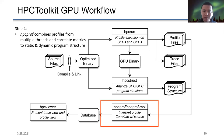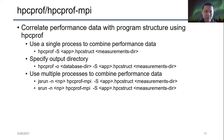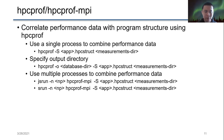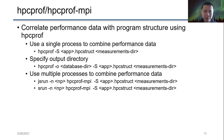Now that we have static program structure and runtime profile data, we use HPCProf to combine profiles from multiple threads and correlate metrics to static and dynamic program structure. HPCProf is relatively simple — pass -S plus the application's data struct file and the measurement directory. If you want to specify your own database name, use the -o option. To accelerate processing using multiple processes, use the MPI version, HPCProf-MPI.